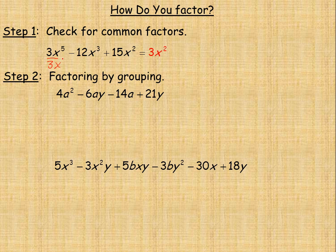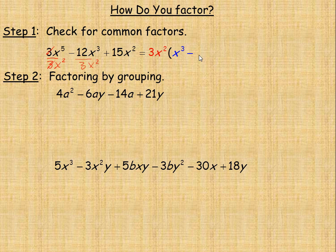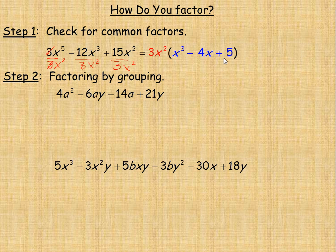We're dividing by 3x squared. 3 divides into itself once, so the coefficient will be 1, and we get x cubed because 5 minus 2 is 3 — when dividing powers with the same base, you subtract the exponents. Next, dividing negative 12x cubed by 3x squared gives minus 4x, because negative 12 divided by 3 is negative 4, and x cubed divided by x squared is x to the first. Finally, 15x squared divided by 3x squared gives 5, since 15 divided by 3 is 5 and x squared divided by x squared is x to the zero, or 1, leaving no x. Then we close the bracket.